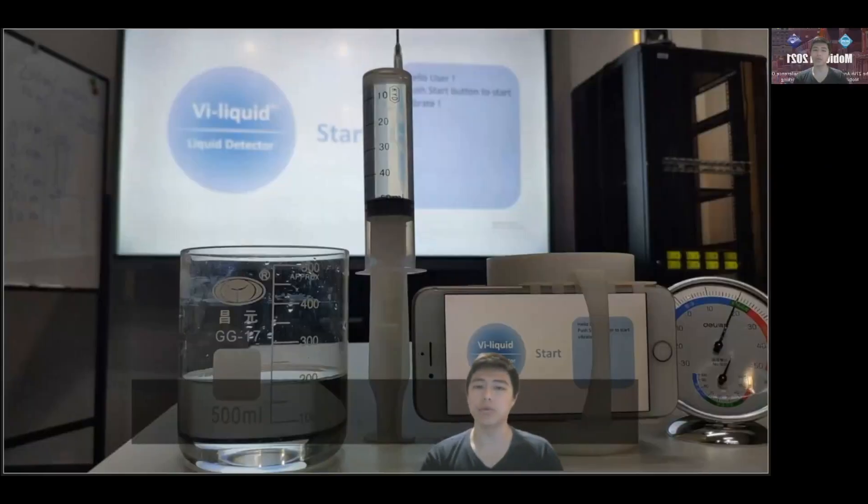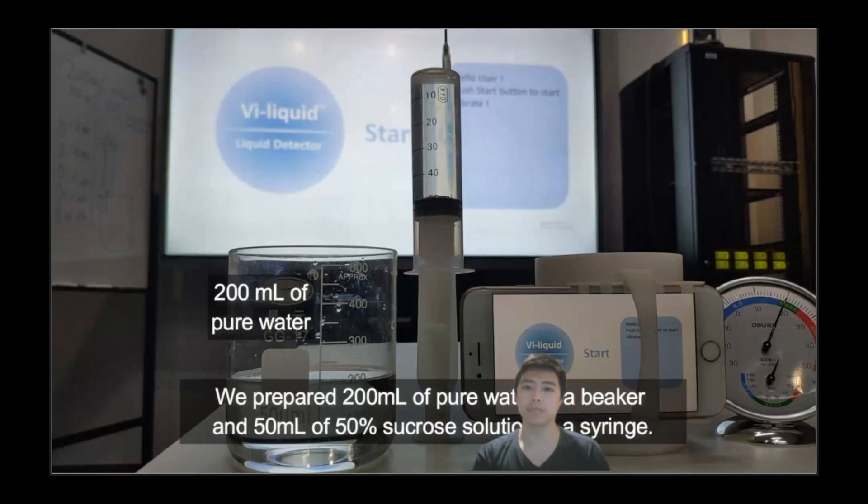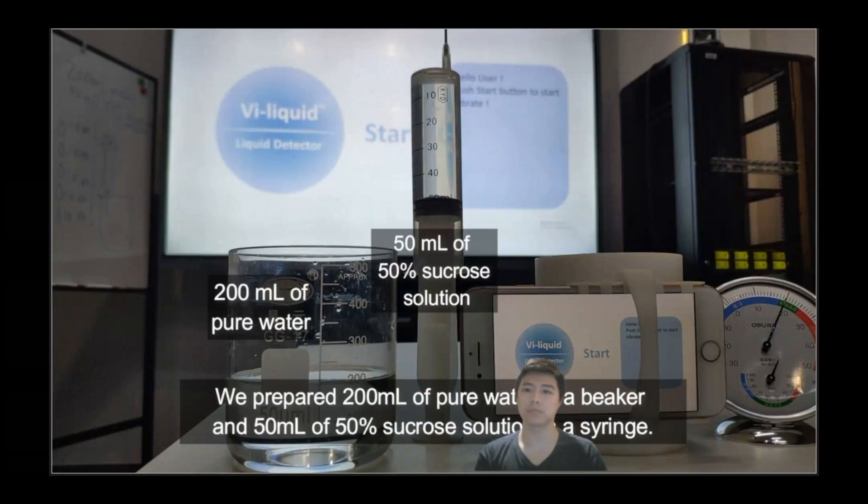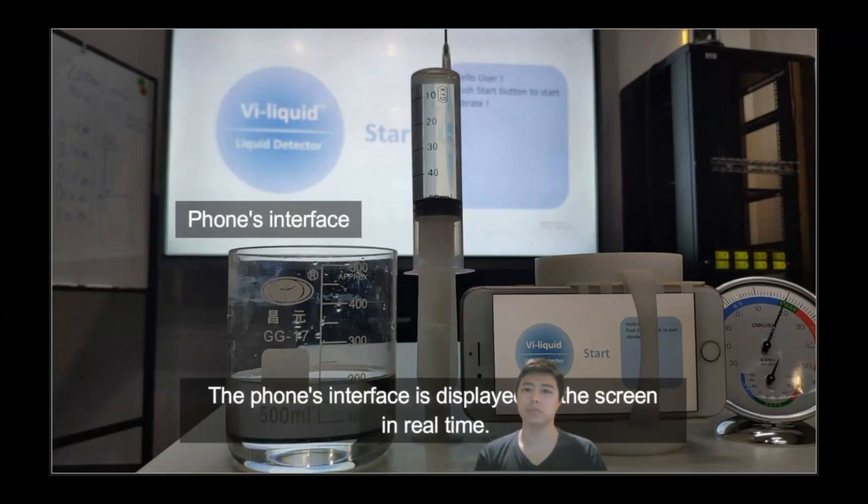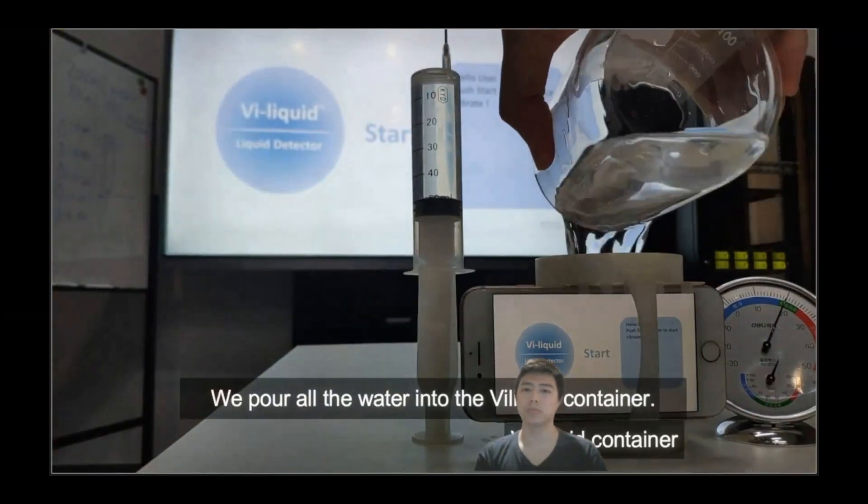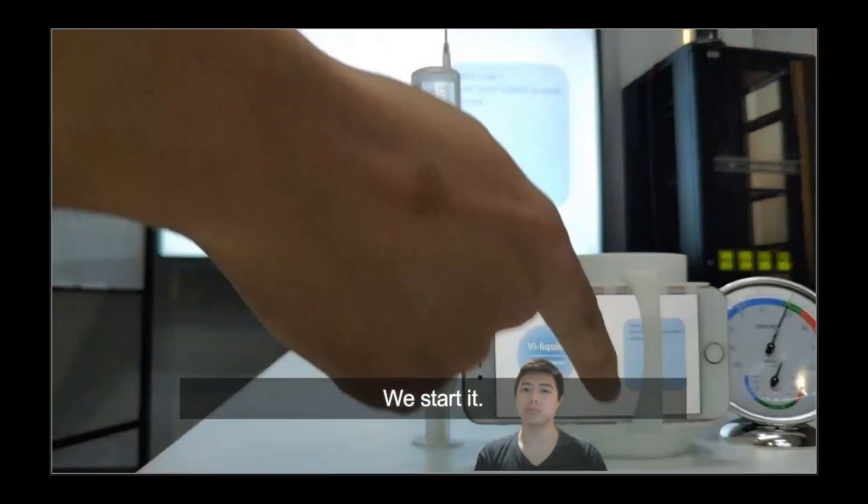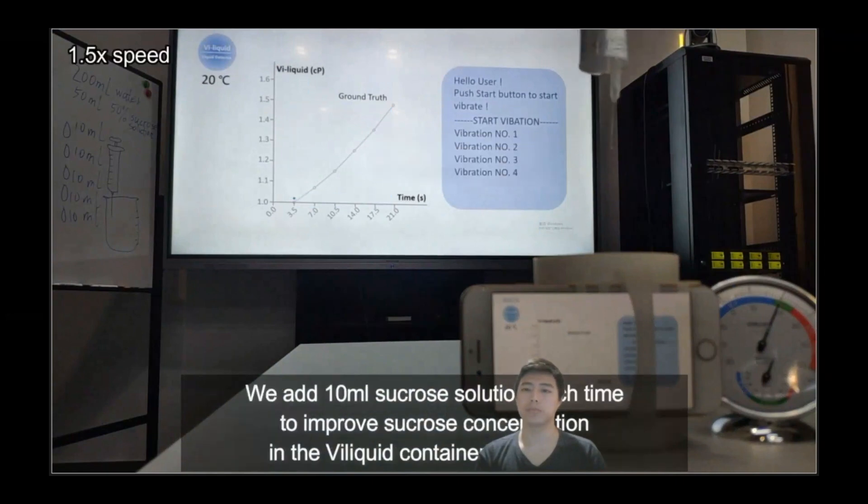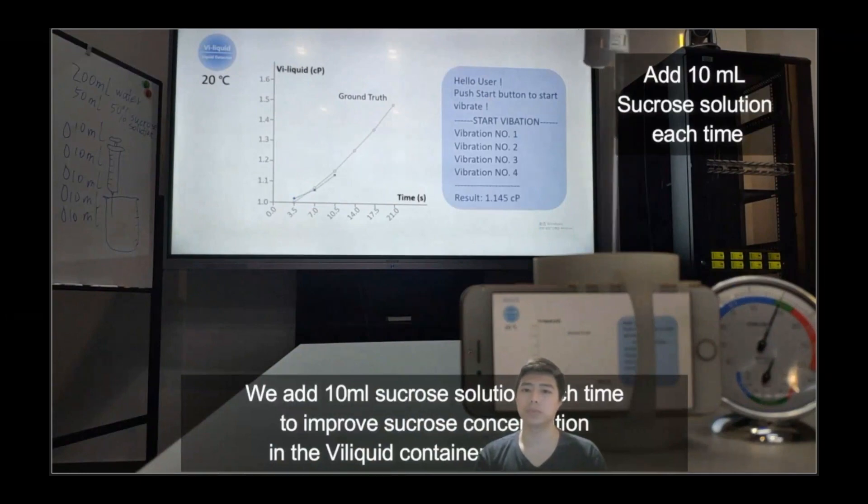Let us watch demos of our system ViLiquid. We prepared 200 milliliters of pure water in a beaker and 50 milliliters of 50% sucrose solution in a syringe. The phone's interface is displayed on the screen in real time. We pour all the water into the ViLiquid container and start. To draw the ground truth curve, we used a viscometer to measure six concentrations of sucrose solutions at 20 degrees Celsius.